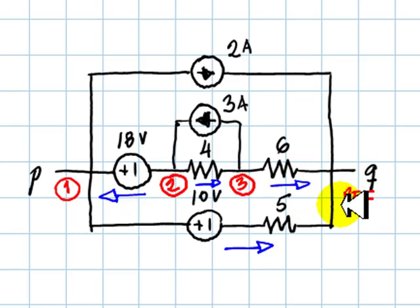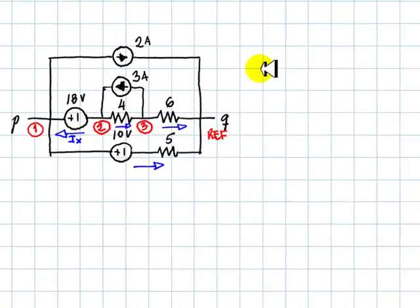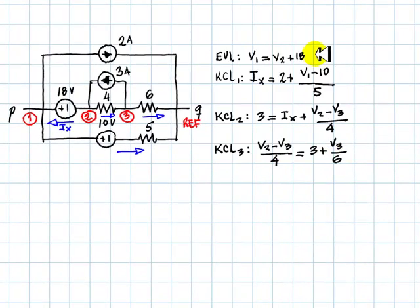Next, we select our branch current, including this dependent source current here. Let me call that Ix. Now we write the nodal analysis equations. Dependent source equation for this dependent branch, and a KCL equation 1, 2, and 3 for each one of nodes 1, 2, and 3.